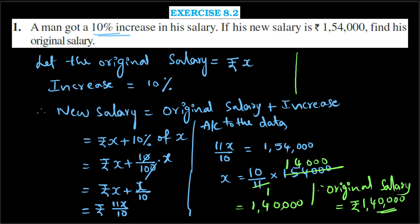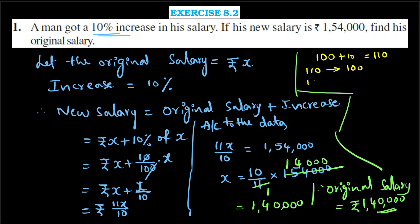The shortcut method: He got a 10% increase. Suppose his original salary is 100 rupees. Then 10% increase means plus 10, giving new salary of 110 rupees. So if new salary is 110, old salary is 100. Then if new salary is Rs. 1,54,000, old salary equals 100/110 × 1,54,000, which gives Rs. 1,40,000. This is the shortcut method.